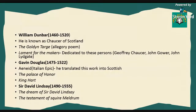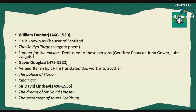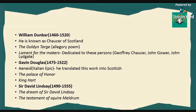Next is William Dunbar. He is known as the Chaucer of Scotland. He wrote a poem called The Golden Targe — an allegory poem — and Lament for the Makers, dedicated to three people: Geoffrey Chaucer, John Gower, and John Lydgate, all of whom we have already seen.